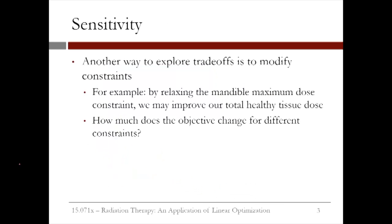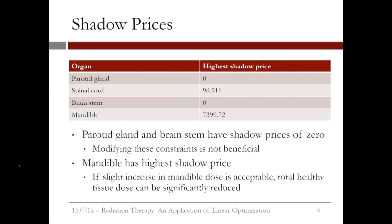Another way to explore trade-offs is to modify the constraints. For example, by relaxing the mandible maximum dose constraint — or by allowing the maximum dose to the mandible to be higher — we may improve our total healthy tissue dose. We would like to know how much the objective changes for different constraints.